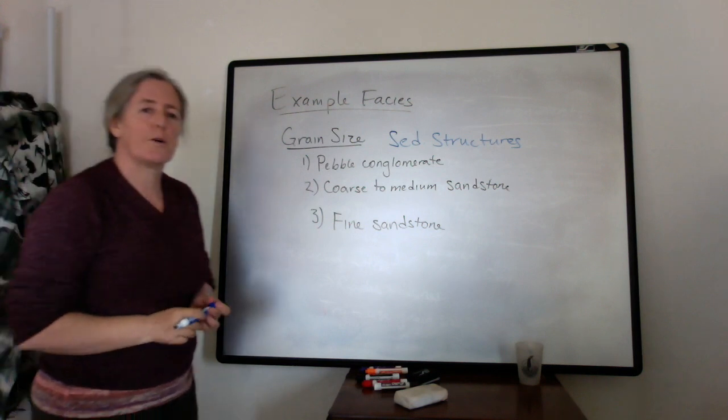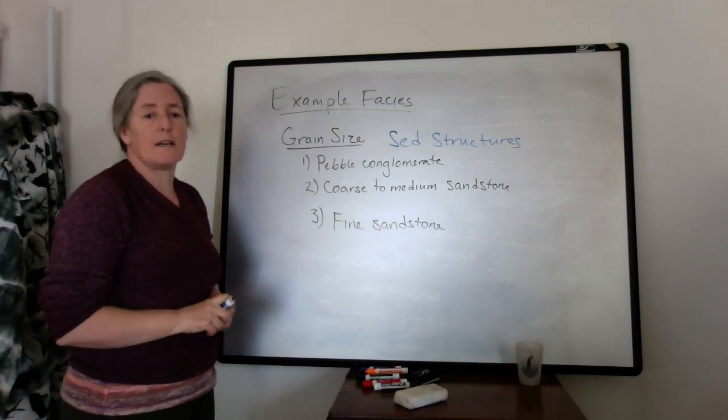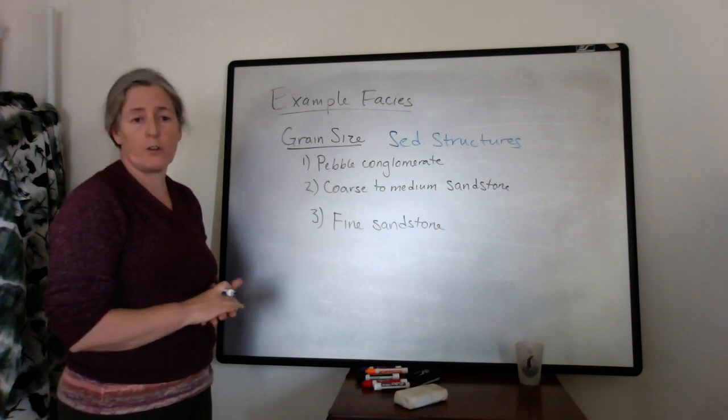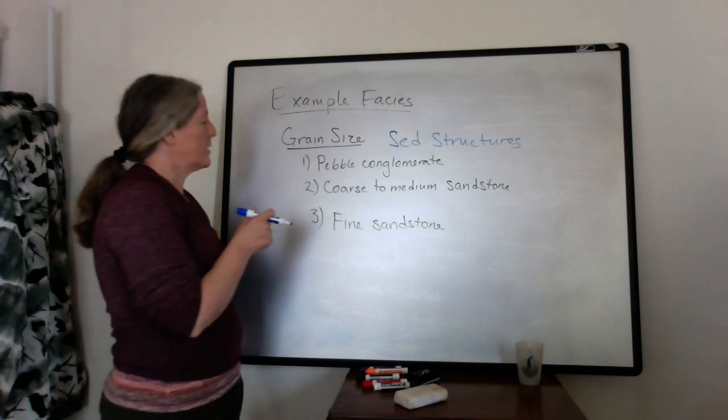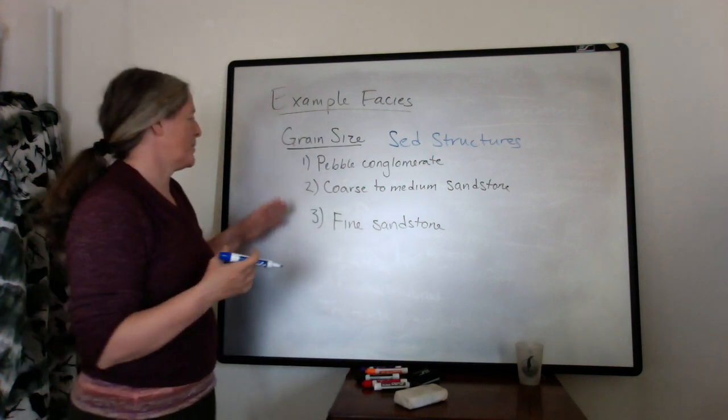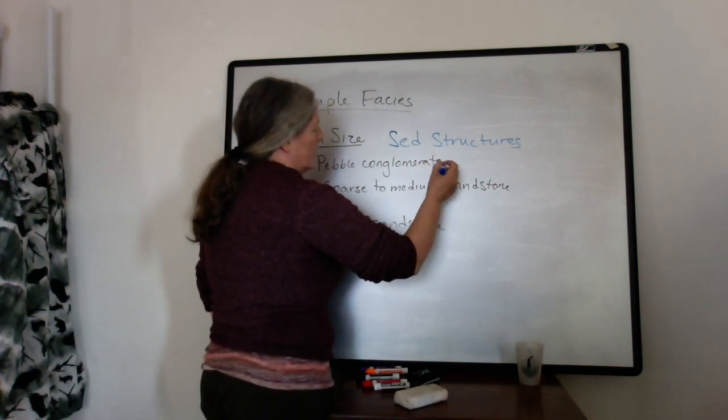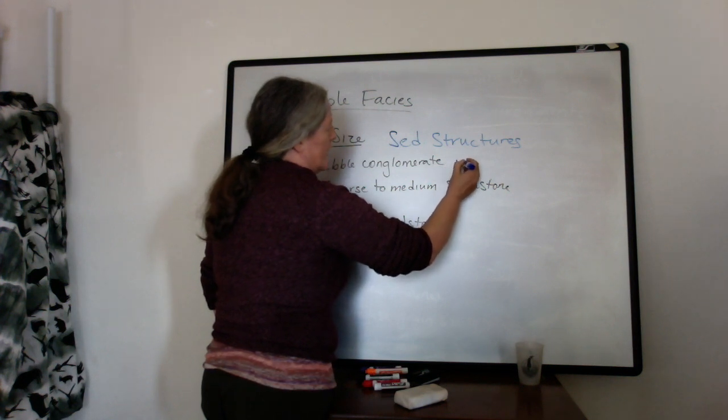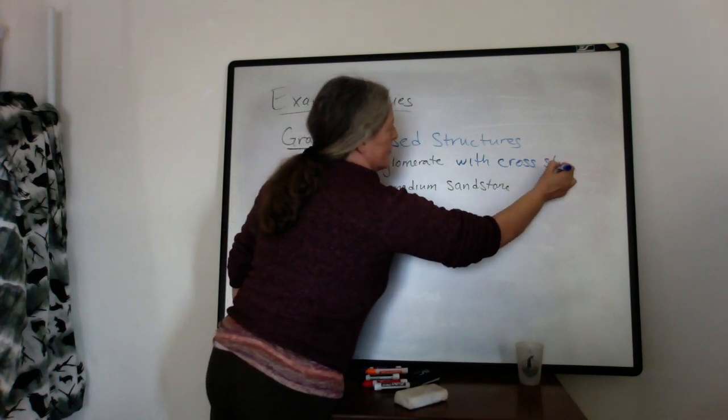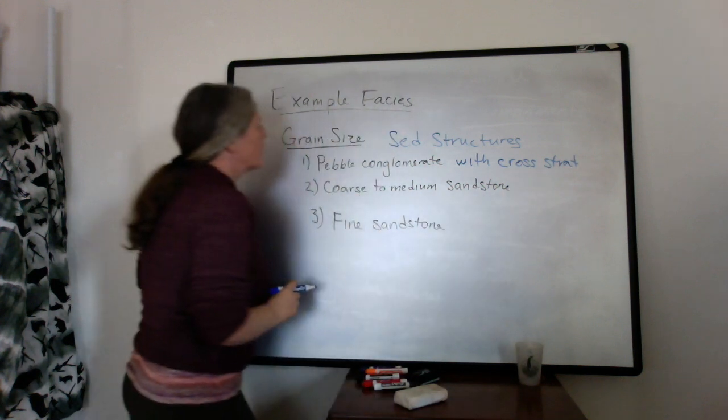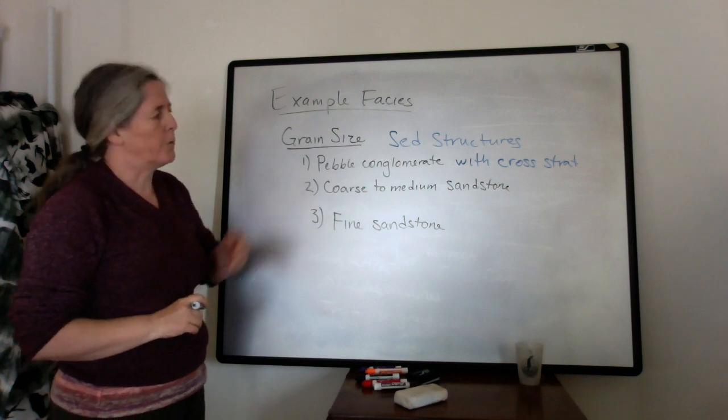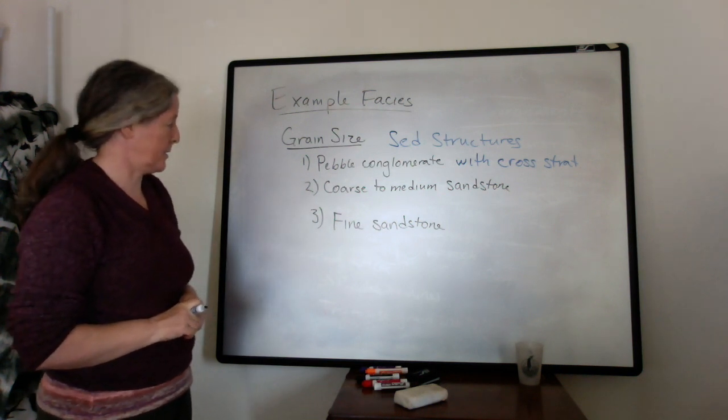The pebble conglomerate at the pebble grain size can either have upper planar lamination or dune cross stratification or lower planar lamination. A lot of times in rivers that are medium sized rivers you often get the dune cross stratification, so I'm going to add with cross stratification. Ripples don't form in pebble sized grains so it's implied that it's dune. You could say with dune cross stratification to be more explicit about it.